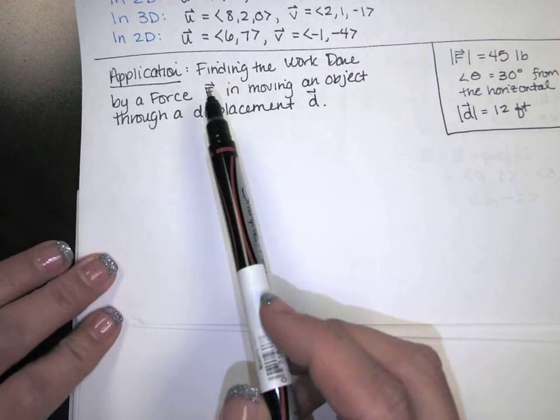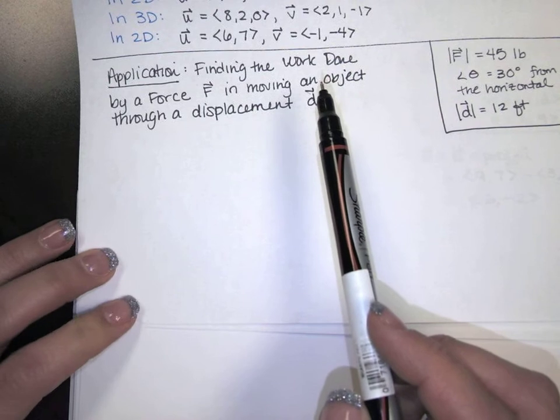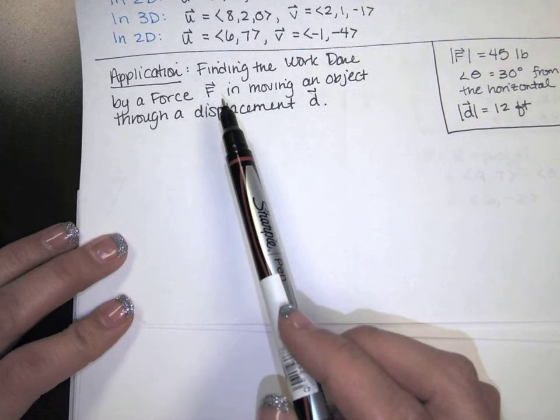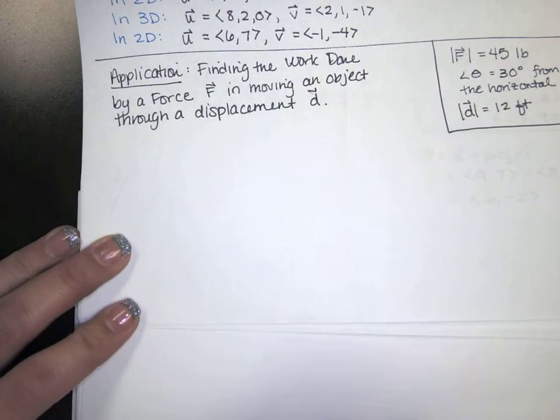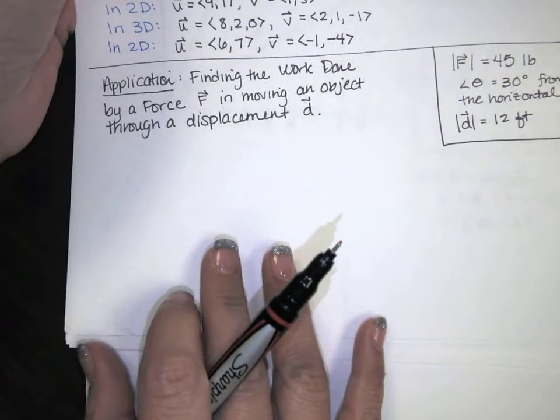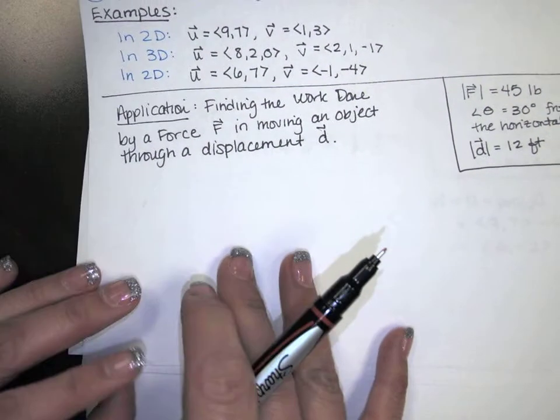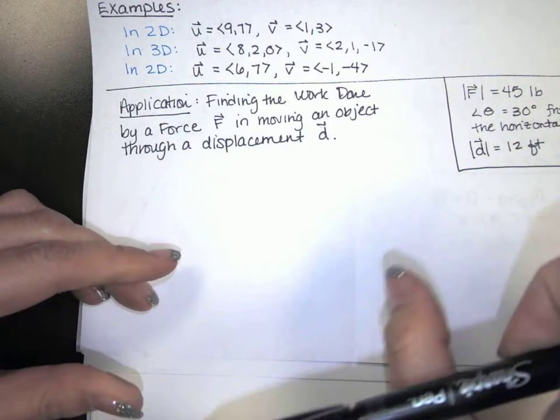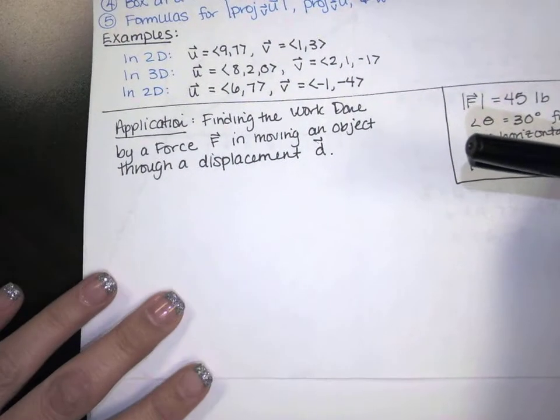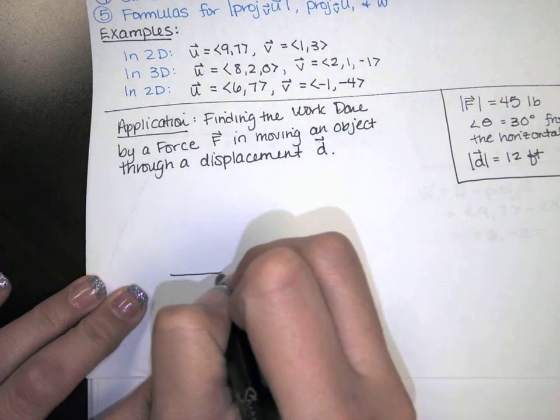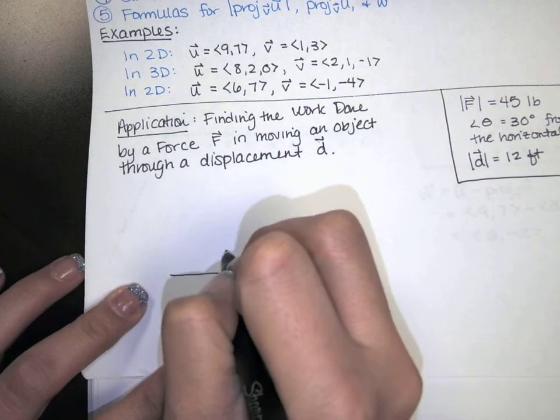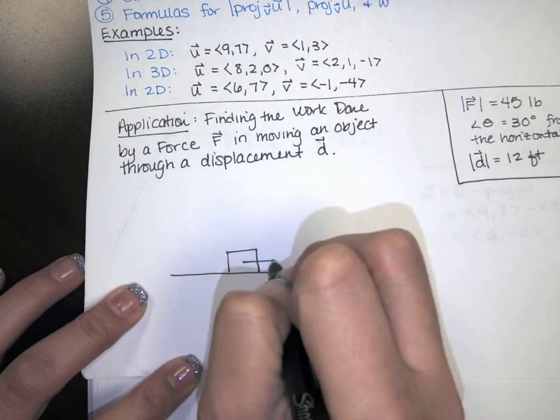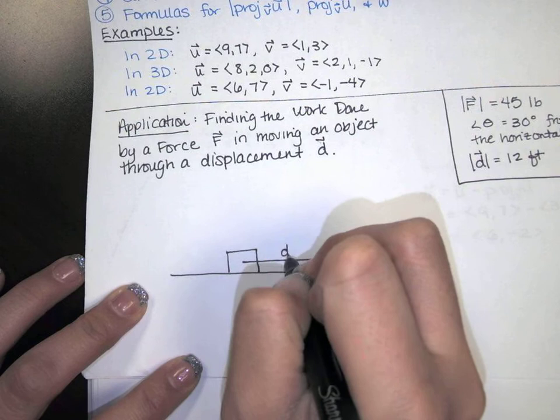So what we're going to do is we're going to find the work done by a force F in moving some object through a displacement d. And I think the easiest way for me to think about it is in terms of moving actually. Let's say I've got a big old box. It's heavy. I'm trying to move my box across the room. I'm trying to move it through this displacement d.